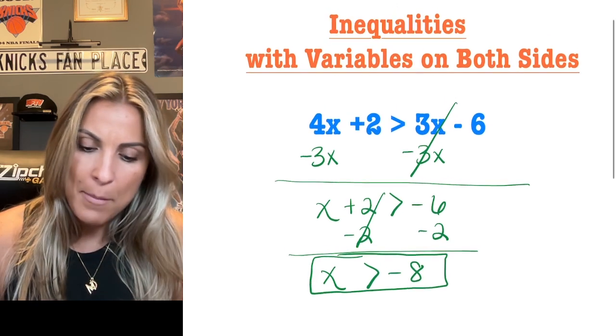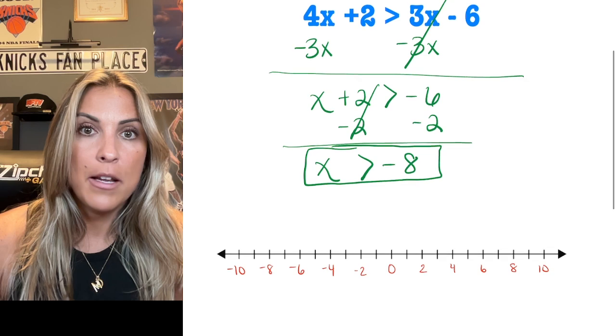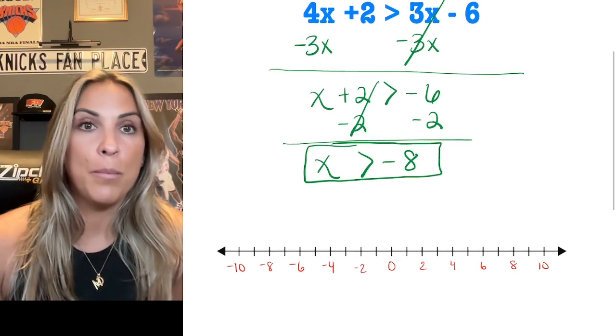Now, when I graph this, I'm going to look for that negative 8 on the number line. And now I have to make a decision of what type of circle to put on that negative 8.